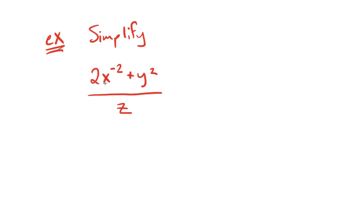Here we've got 2 times x to the negative 2 plus y squared, and all of that is divided by z. First I'm going to work it the correct way, and then I'm going to point out the common error in a problem like this.